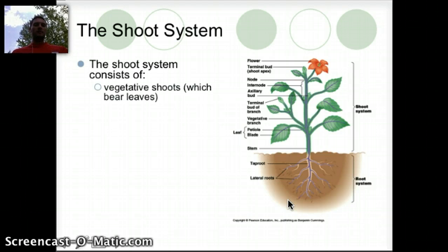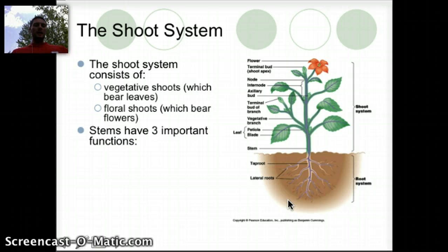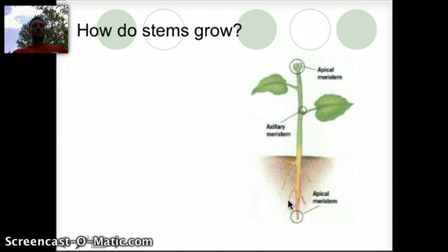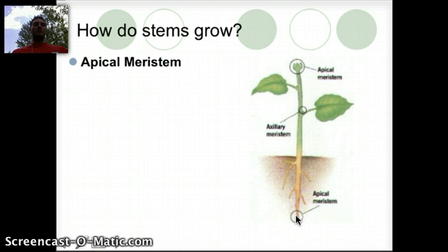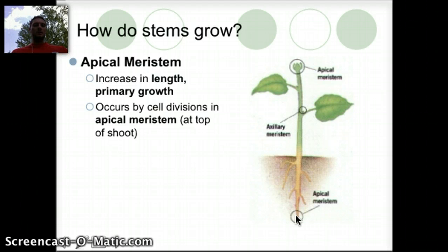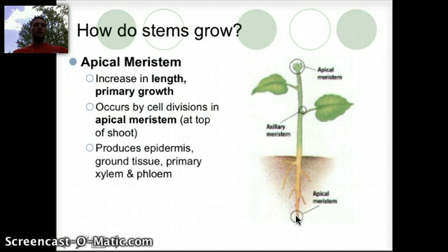The shoot system consists of vegetative shoots which eventually bear leaves, and floral shoots. The stems have three important functions: the production of leaves, flowers, and branches; holding leaves up for sunlight so they can photosynthesize; and the transportation of substances between the roots and the leaves. Apical meristem can be found at the top and the very bottom of the plant. This is the primary form of growth — an increase in length — occurring by cell division, producing epidermis, ground tissue, and primary xylem and phloem.